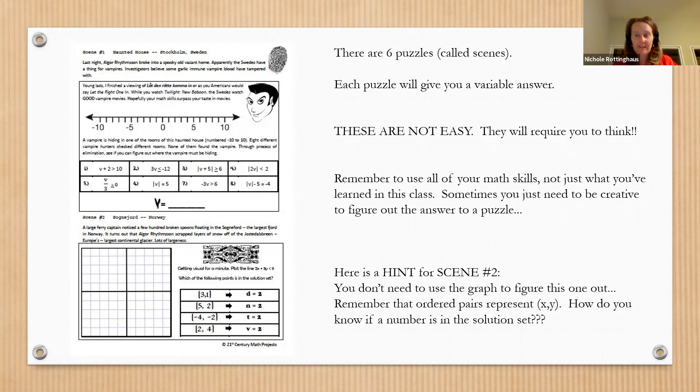I want to give you a hint on scene number two, because you're going to look at that and go, we didn't solve anything like that in this unit. And you're right, we didn't do any inequalities that included two variables. But I am confident that if you think about it, you can figure out a way to solve that problem. I think you can do it without using that graph. Think about how do you know if a number or an ordered pair is a solution to an equation.